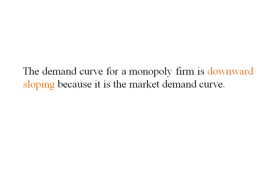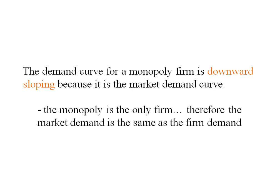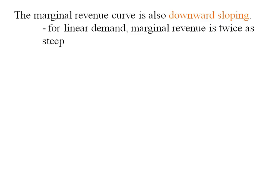The demand curve for a monopoly firm is going to be downward sloping because it's going to be the market demand. A monopoly firm is the only firm, so market demand is the monopoly's demand. Marginal revenue is also going to be downward sloping.